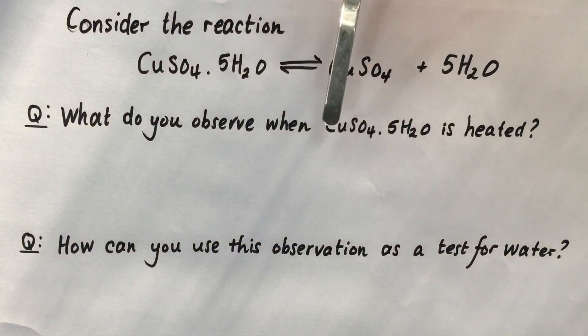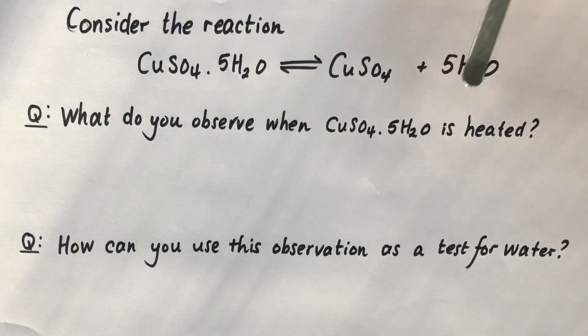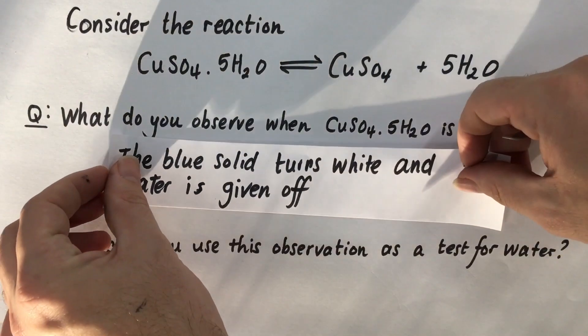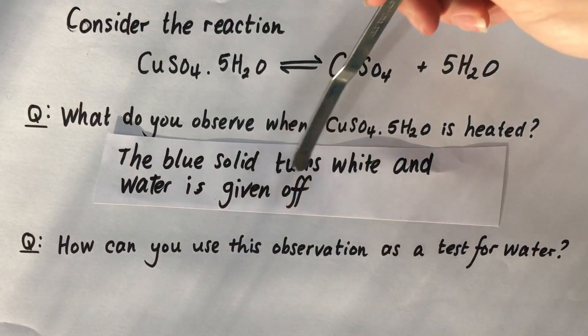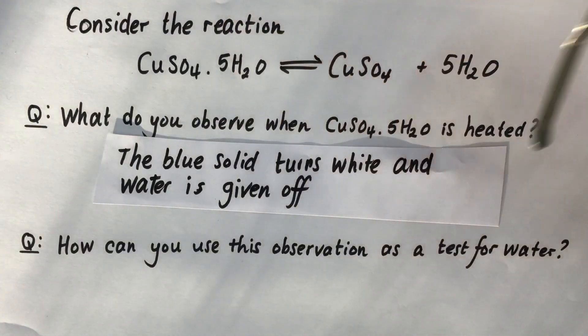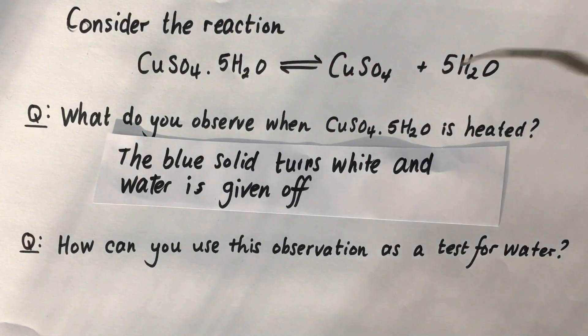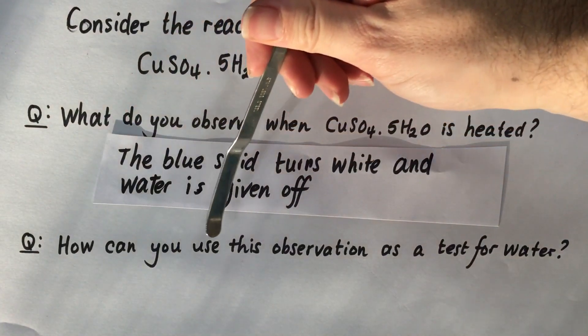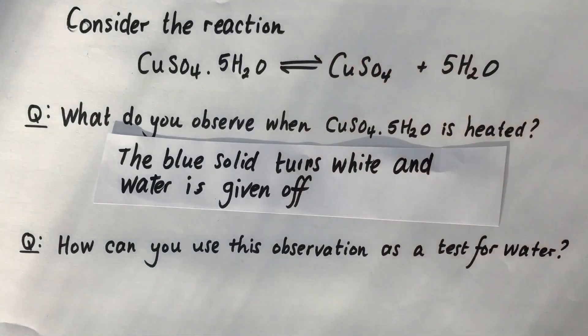What do you observe when CuSO4·5H2O is heated? We found that the blue solid turns white and water is given off. And the second question says, how can you use this observation as a test for water?